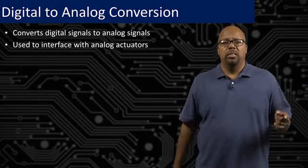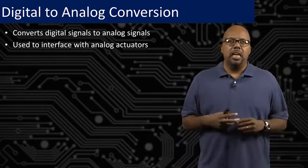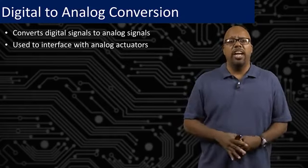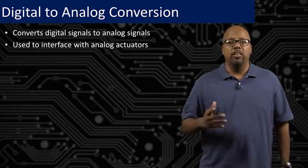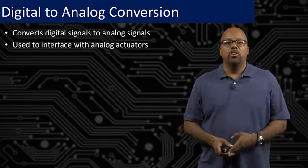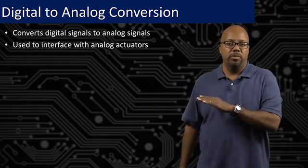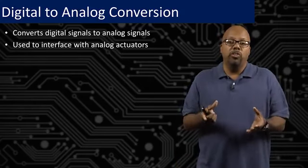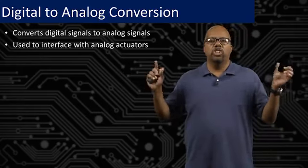On the output end, you often need digital-to-analog conversion. Let's say I have a microcontroller outputting sound to speakers — these speakers are analog devices, they need an analog signal. But the microcontroller is outputting zeros and ones, so you need digital-to-analog conversion to take those digital signals, convert them to analog, and drive the speaker. It's very common to see digital-to-analog conversion on the output of a system and analog-to-digital conversion on the input, because the microcontroller in the middle is primarily digital, and the world is often analog — so you need conversion on either end.